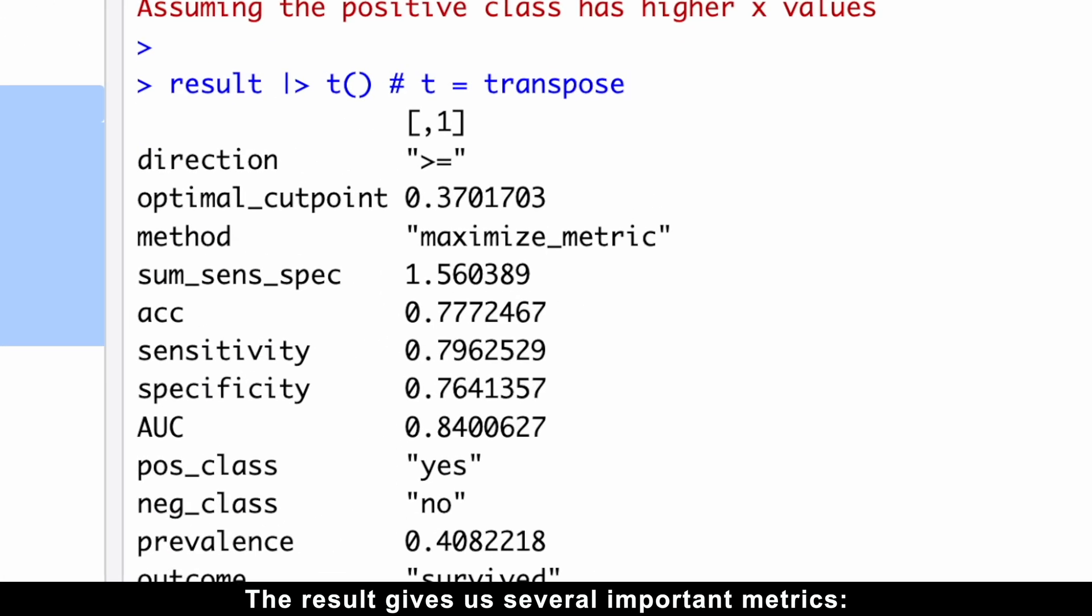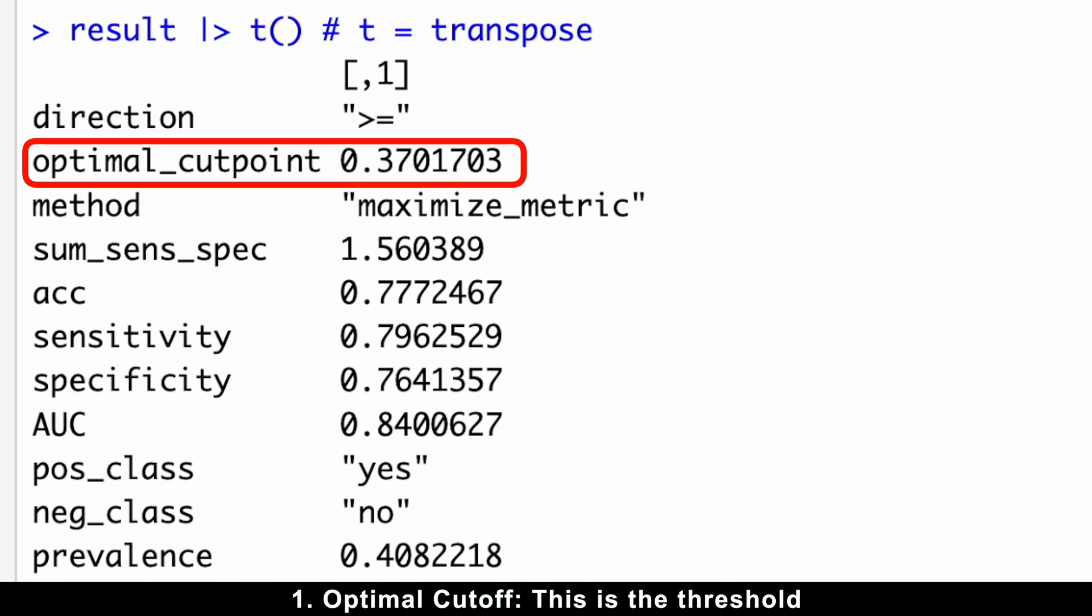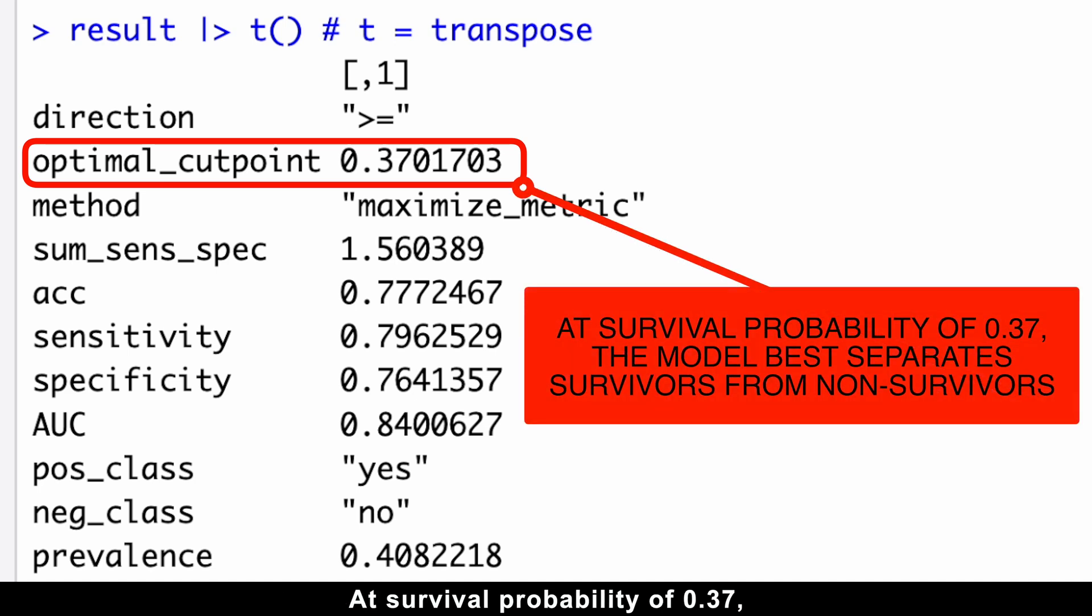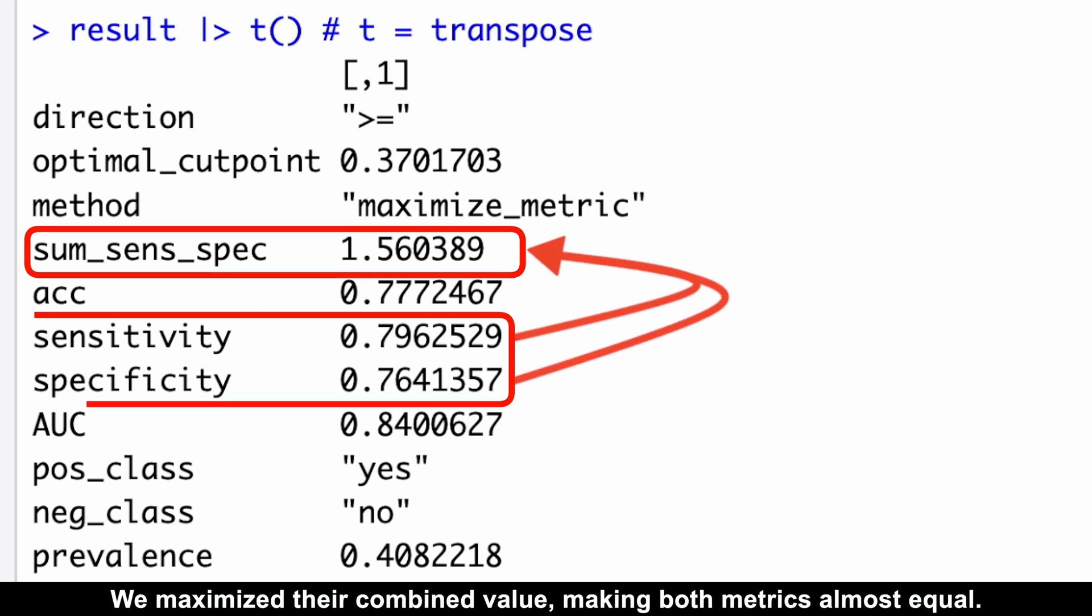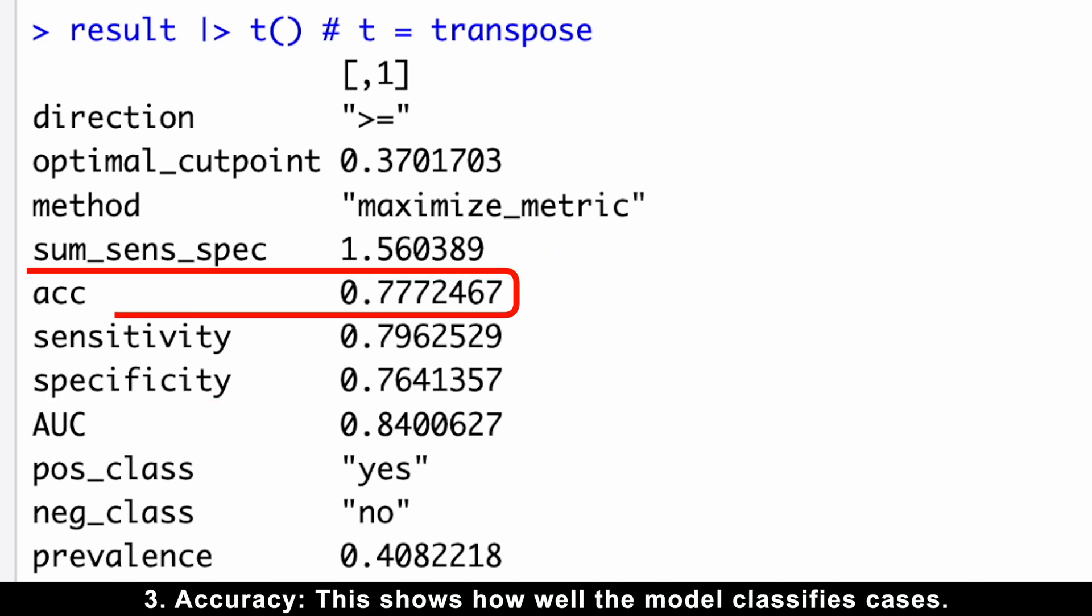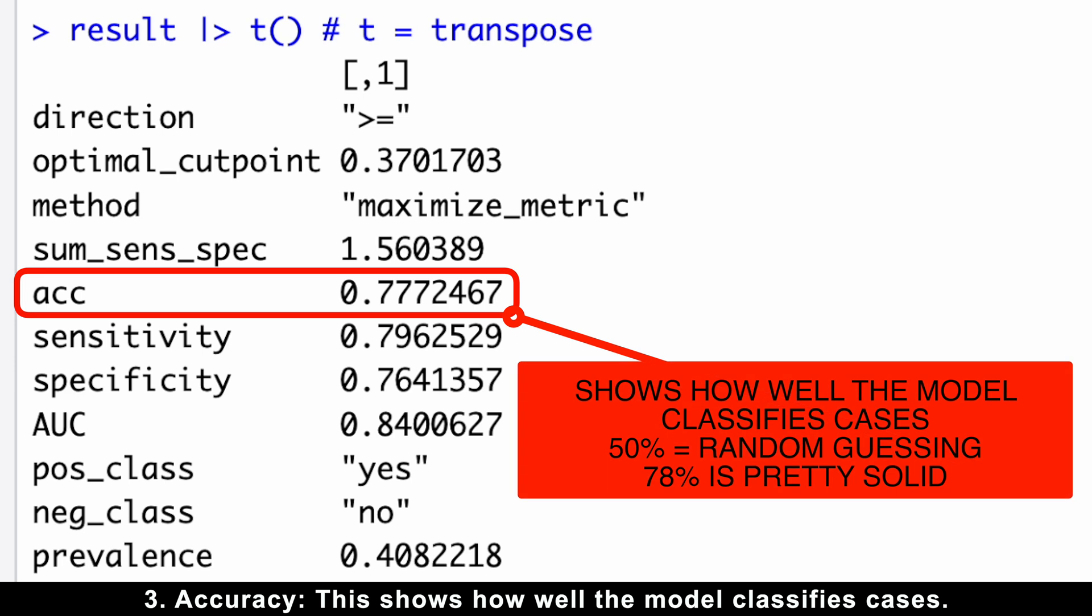The result gives us several important metrics. Optimal cutoff: this is the threshold where sensitivity and specificity are balanced. At survival probability of 0.37, the model best separates survivors from non-survivors. The sum of sensitivity and specificity? We maximize their combined value, making both metrics almost equal. Accuracy: this shows how well the model classifies cases. Since 50% is just random guessing, 78% is pretty solid for our small dataset.